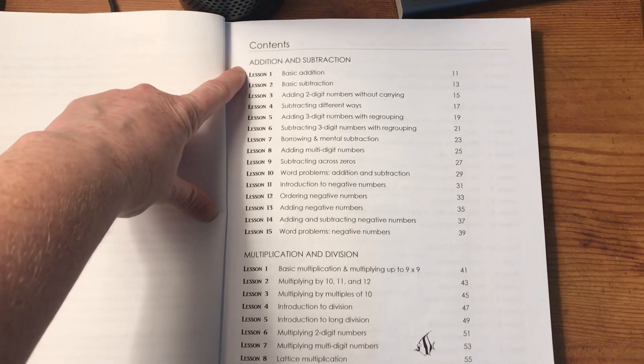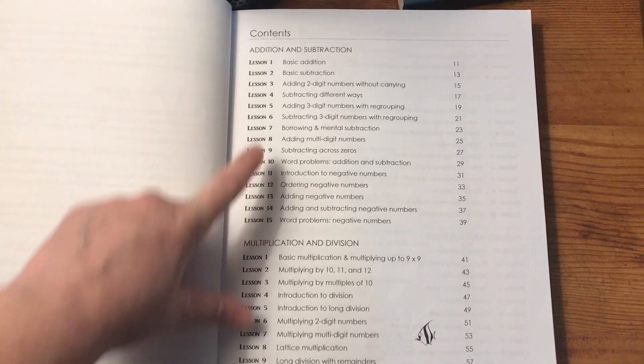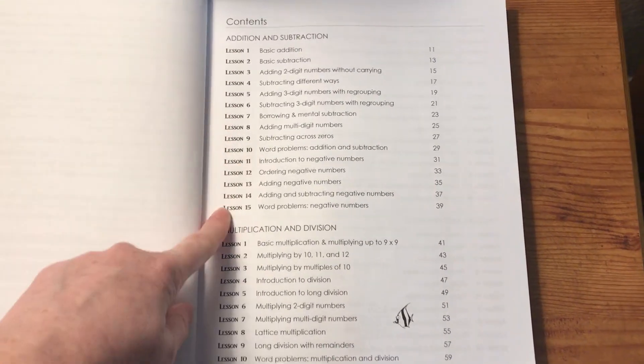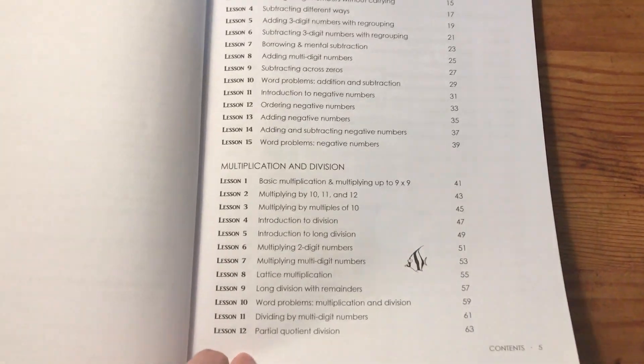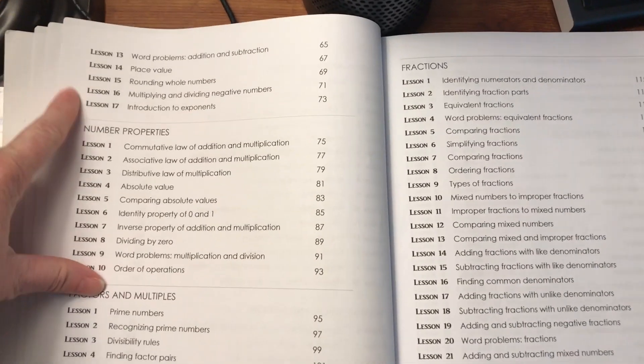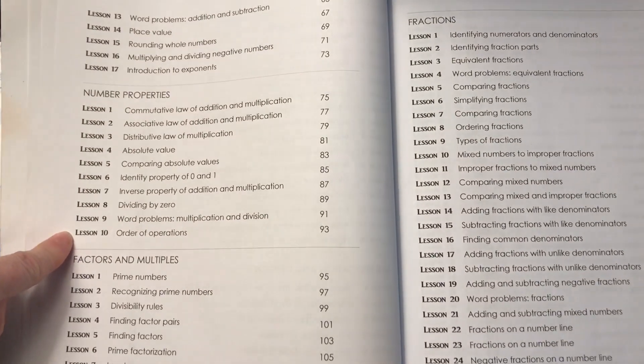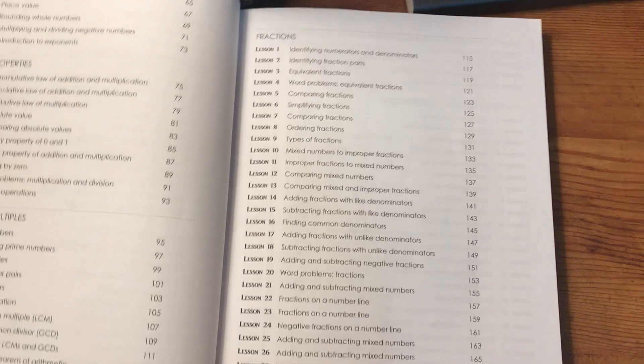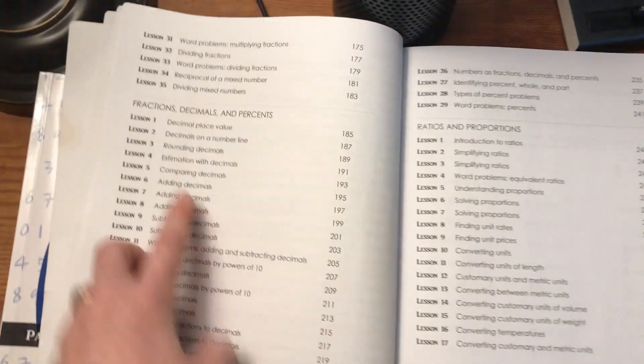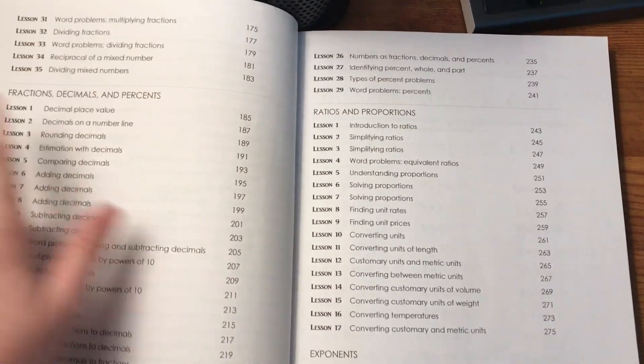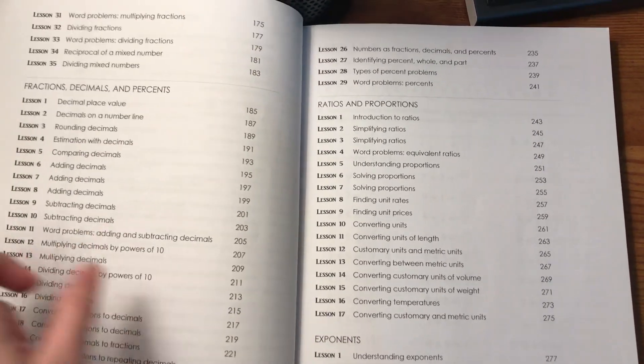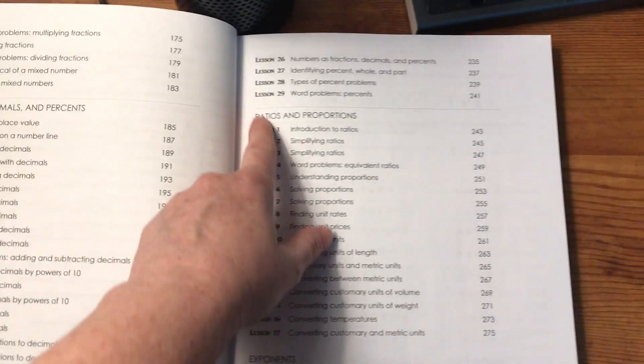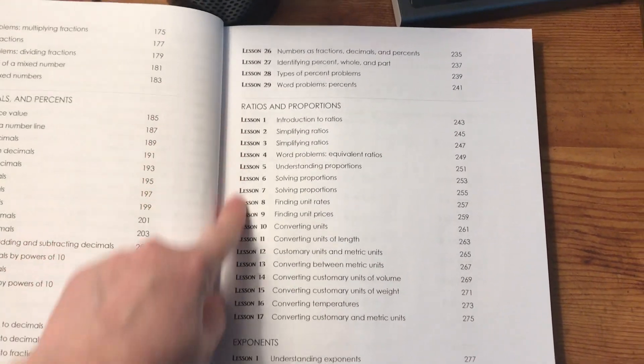So it starts off with addition and subtraction, and there are 15 lessons covering that. Then there's multiplication and division, which is 17 lessons. Number properties, 10 lessons on those. Factors and multiples, 10 lessons. And then fractions. You'll notice here we get into the good stuff. There's a lot more lessons on fractions, there are 35. Then fractions, decimals, and percents, there are 29. So as you can see, those fractions and decimals always seem to be a problem area for students sometimes. Those have quite a bit of lessons in them. And then ratios and proportions, 17 lessons. And then exponents, only four lessons.